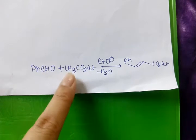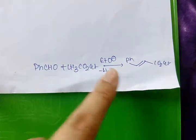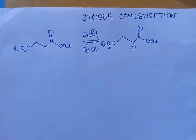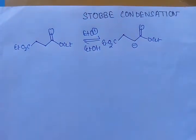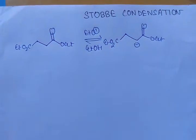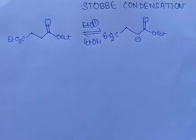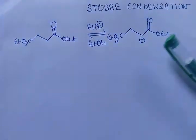But in case of Stobbe condensation, dibasic ester is used and two acidic centers are present. At first, in presence of base, one of the acidic hydrogens is captured and a negative charge forms.